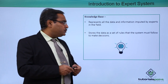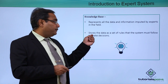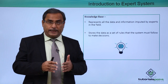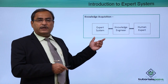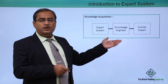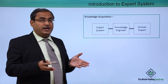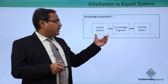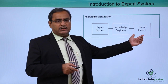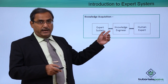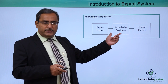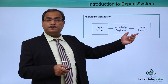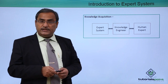The knowledge base stores data as a set of rules that the system must follow to make decisions — it will store data in the form of rules whenever decisions need to be taken. The next part is knowledge acquisition. The diagram depicts how knowledge acquisition and accumulation of knowledge takes place. We have components like the expert system, knowledge engineers, and human expertise. Knowledge flows bi-directionally: the expert system gets knowledge from the knowledge engineer, and the knowledge engineer can also access information from the expert system. Human experts interact with the knowledge engineer as well.